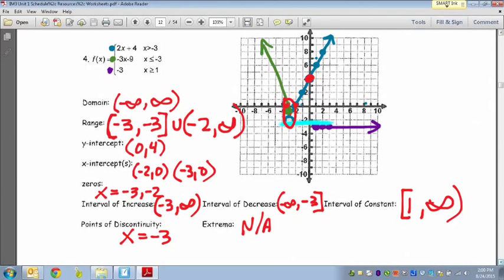That kind of goes through all the things you need to know. The trickiest thing was the range right there, because there's a gap of numbers which aren't included. And then also there's an interval of increase and interval of constant happening at the same time. But with piecewise functions, that sometimes happens, so don't worry much about that.